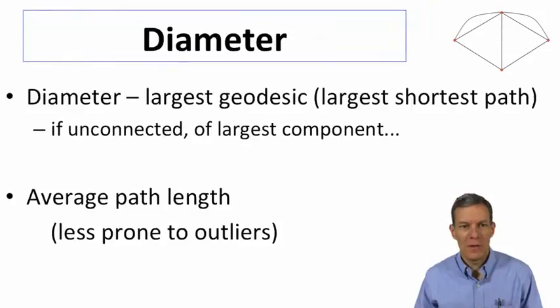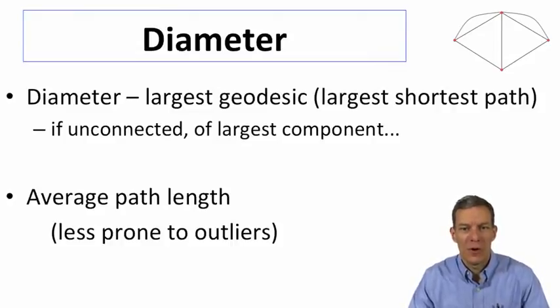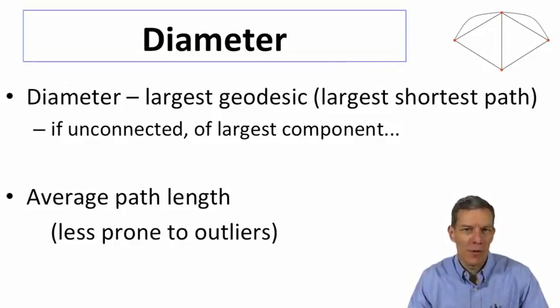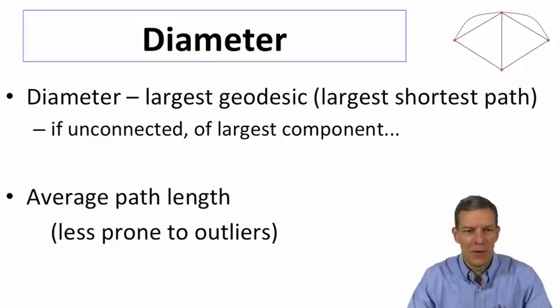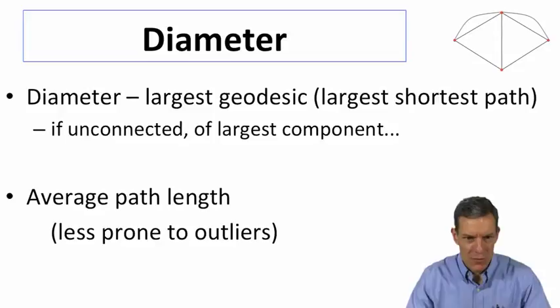So when we look at the diameter, the definition here is the largest geodesic in the network, so the largest shortest path. So if we have a network which is not connected, often when people talk about the diameter, they'll talk about the diameter of the largest component. A lot of times you're going to be stuck with a few isolated nodes in a network, and so diameter often will then just refer to the largest component.